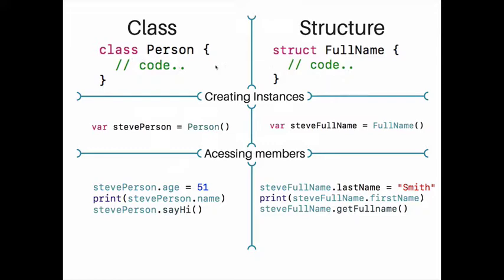We define classes and structures using the 'class' or 'struct' keywords. When we want to use them, we need to create instances. For a class instance, we use the name of the class followed by parentheses, optionally providing parameters. For a struct instance, it's very similar — we use the name of the struct and parentheses, optionally passing values.